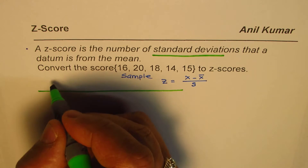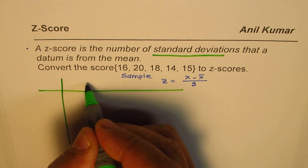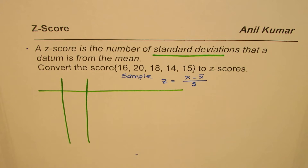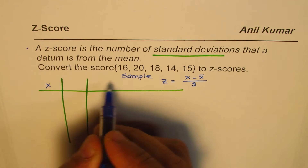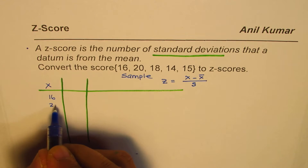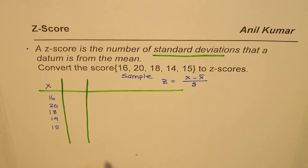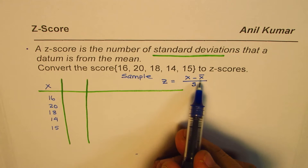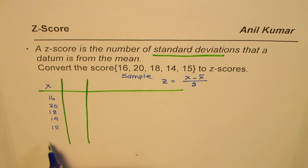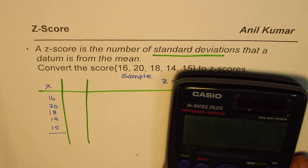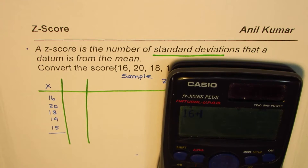Let's make our table. We have these test scores written as x: 16, 20, 18, 14, and 15. Now let's find the average first. We'll find the sum: 16 plus 20 plus 18 plus 14 plus 15 equals 83.